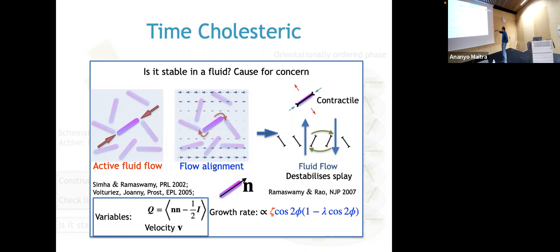This growth rate changes sign as φ crosses π/4 (45 degrees), meaning the aligned state is always unstable for some perturbations regardless of the sign or magnitude of ζ.